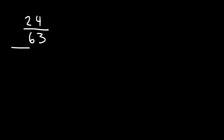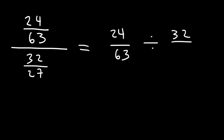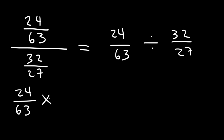Sometimes you may need to divide two fractions in the form of a fraction over another fraction — two fractions placed in one big fraction. It's important to understand that this is equivalent to 24 over 63 divided by 32 over 27. So now it's in a form that we're more familiar with, and using keep-change-flip it becomes 24 over 63 times the reciprocal of the second fraction, which is 27 over 32.